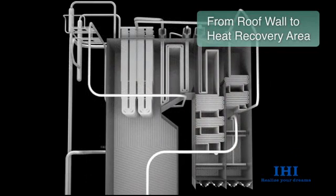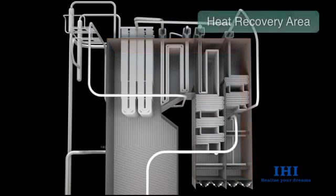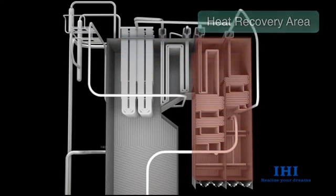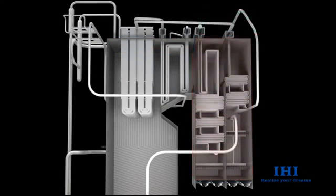After passing through the rear wall, the steam is split into three main paths — in the front wall, side walls, and partition wall of the heat recovery area — and is then sent to the superheater section.